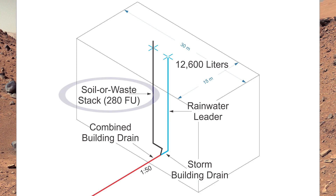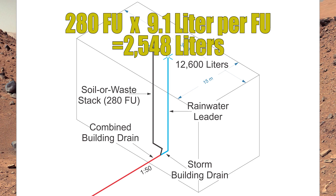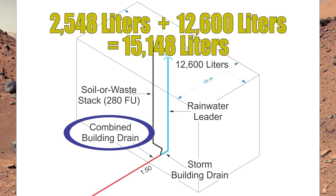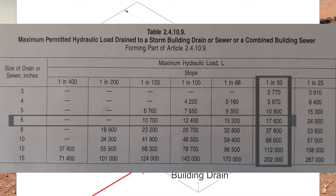This second example is exactly like the last one, except now we have 280 fixture units draining down that soil-away stack. Remembering the code clause: if you have more than 260 fixture units, you take that fixture unit value and multiply it by 9.1 liters per fixture unit. So: 280 fixture units times 9.1 equals 2,548 liters. To size the combined building drain, I take that 2,548 liters and add it to the rainwater load of 12,600 liters, giving 15,148 liters. Back into table 2410.9, still grading at 1 in 50 — six inch is still good for the combined building sewer.